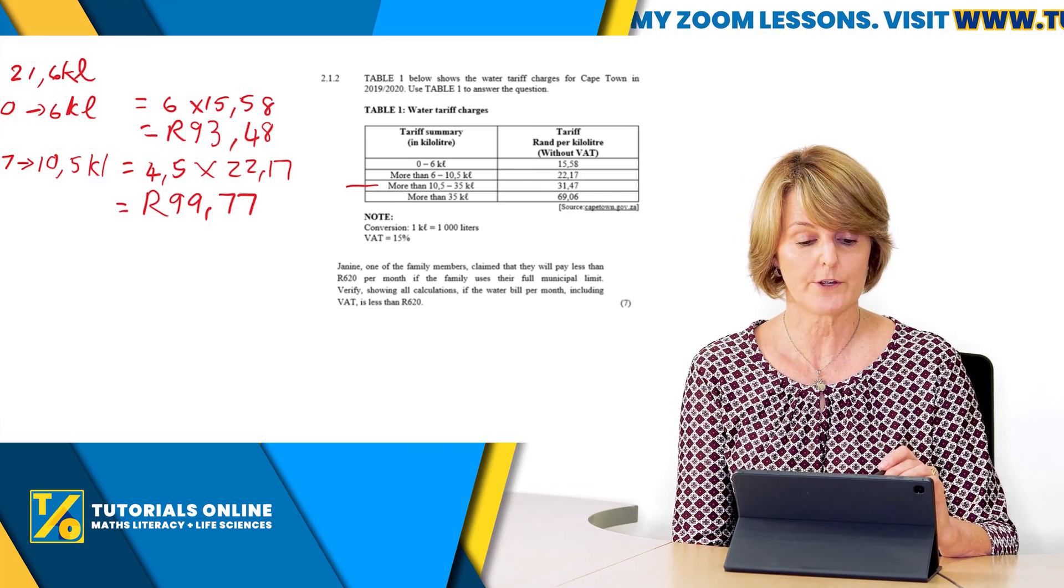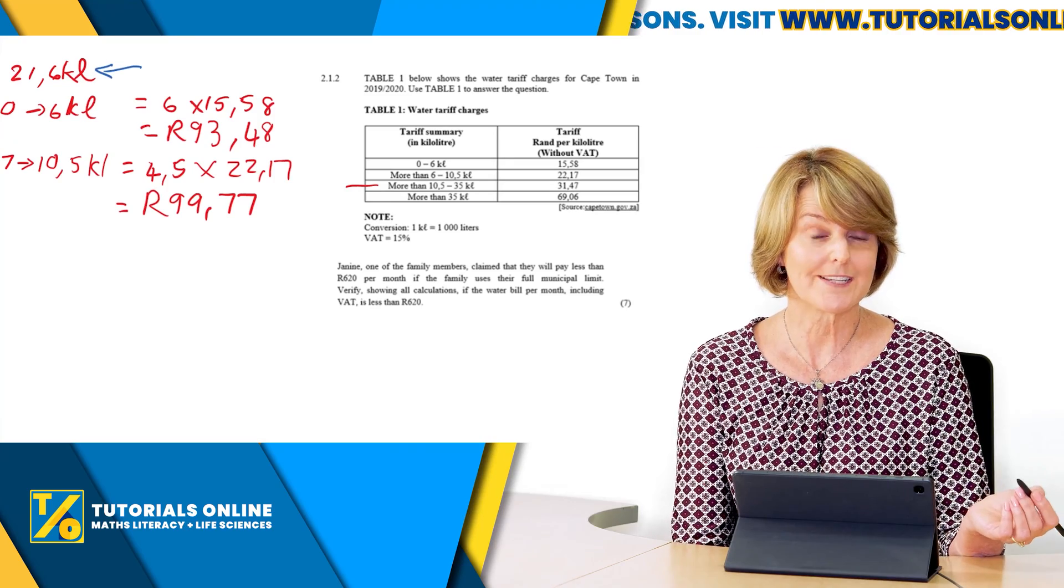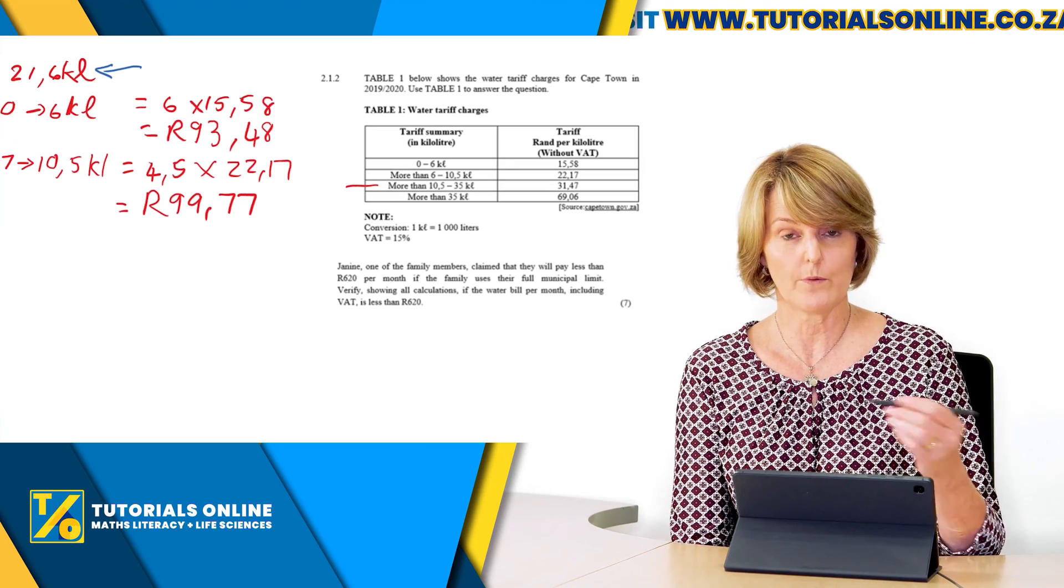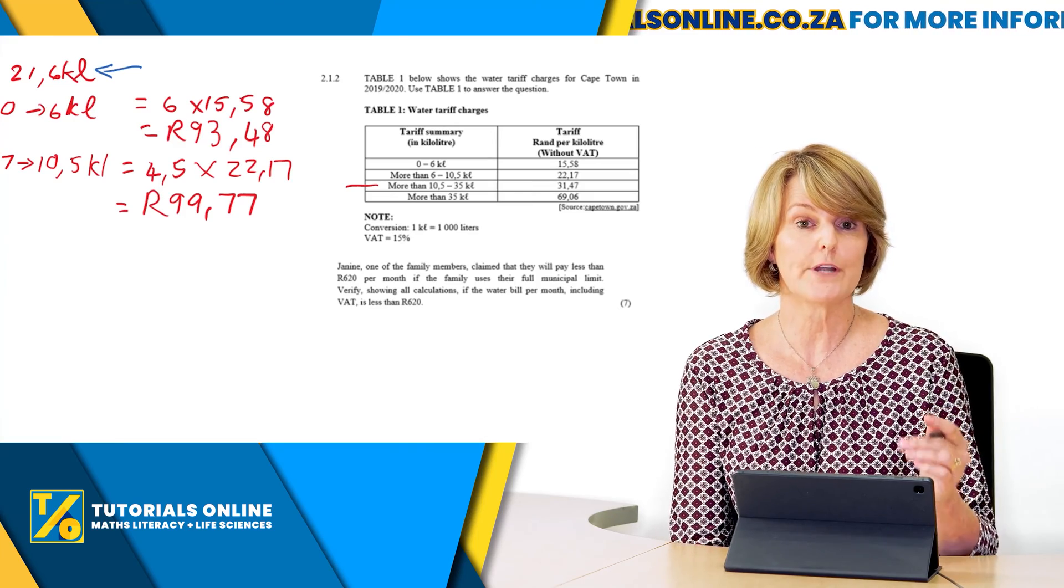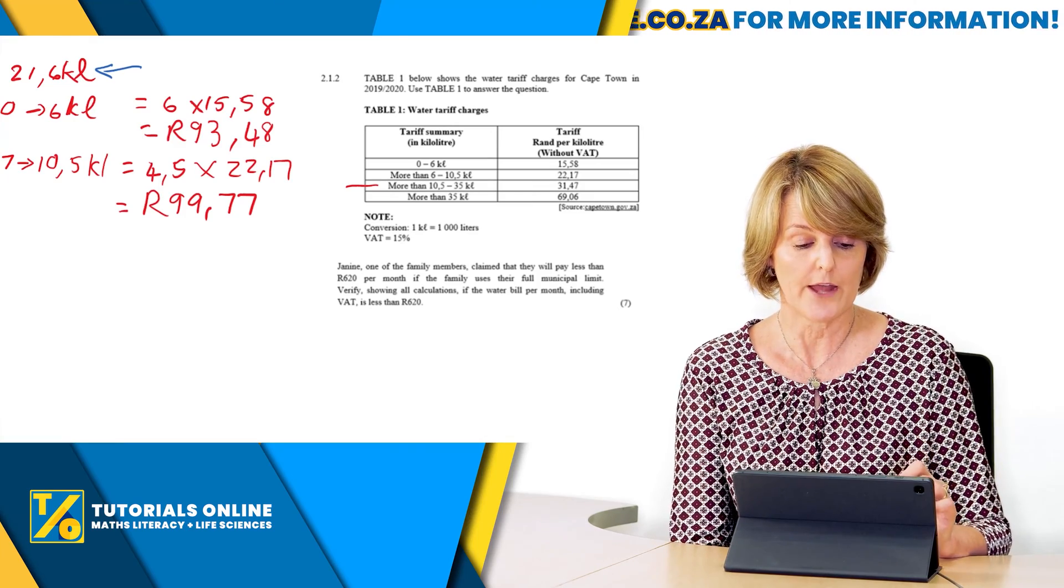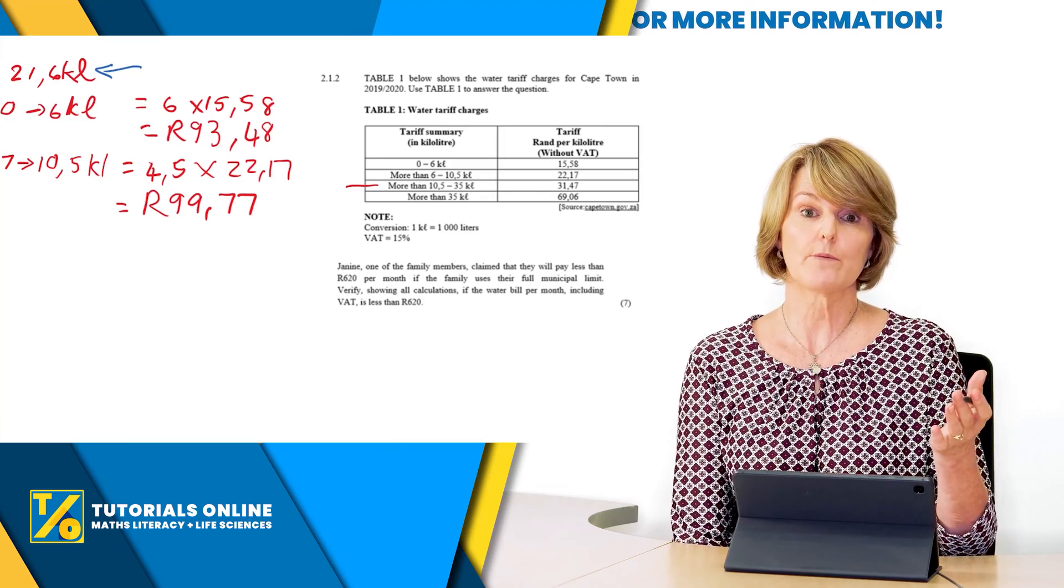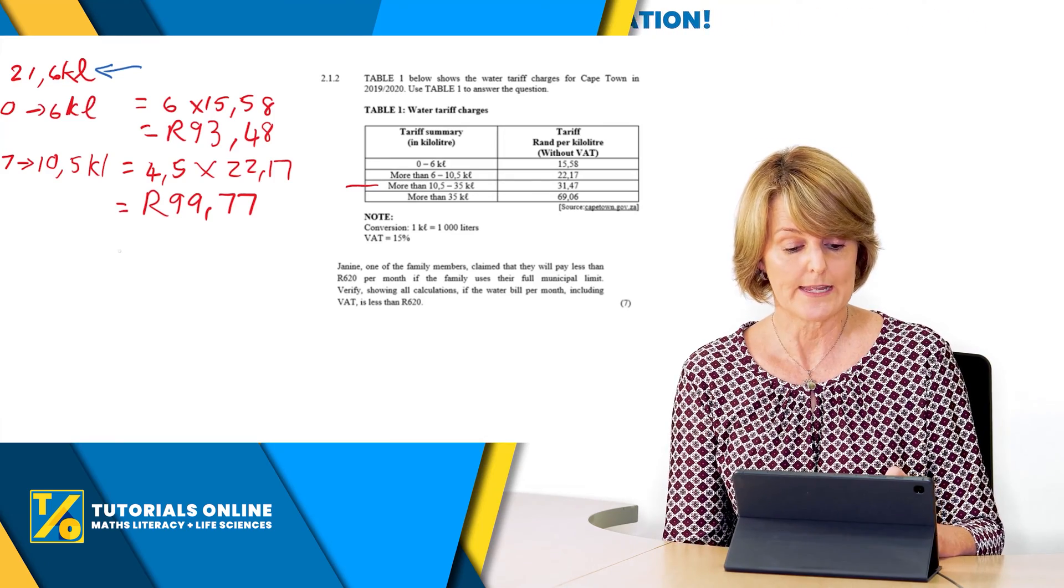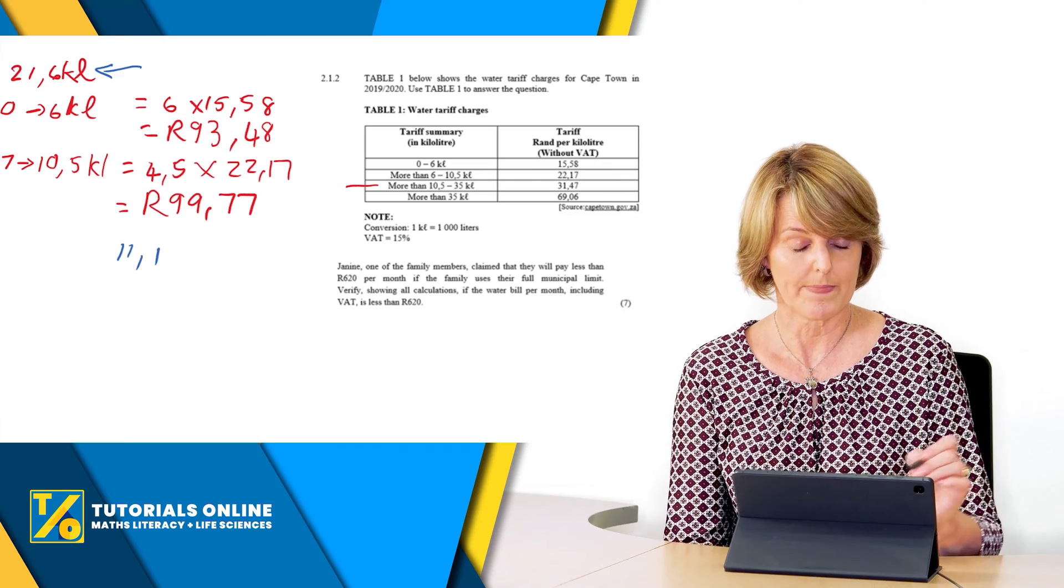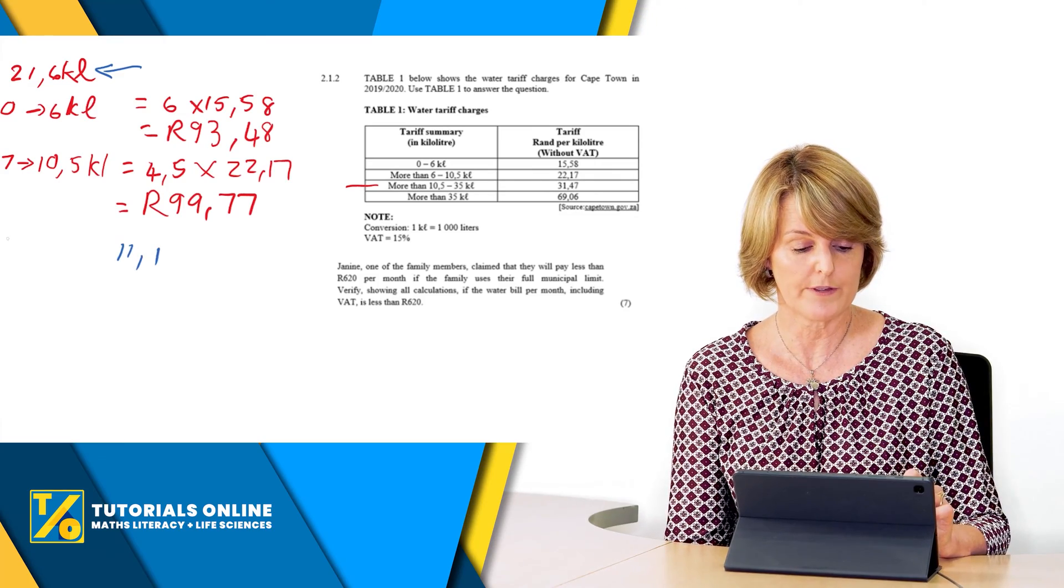So we're not going to go all the way to 35, we're going to stop at 21.6. What you do now is you take your calculator and you work out 21.6 minus 10.5 and you'll get 11.1 as your answer. So now over here I'm just going to write it here so we know what we're doing, and also if you're writing it for your marker that they know what you're doing.